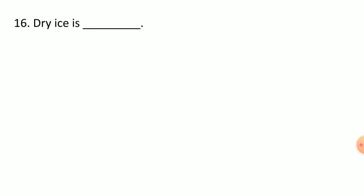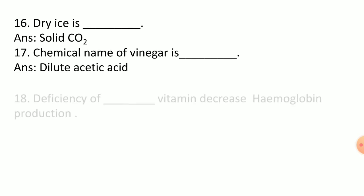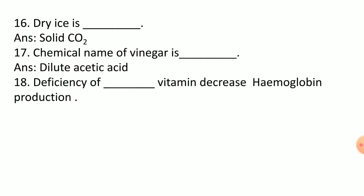Dry ice is solid CO2. The chemical name of vinegar is dilute acetic acid. Deficiency of vitamin decrease hemoglobin production.